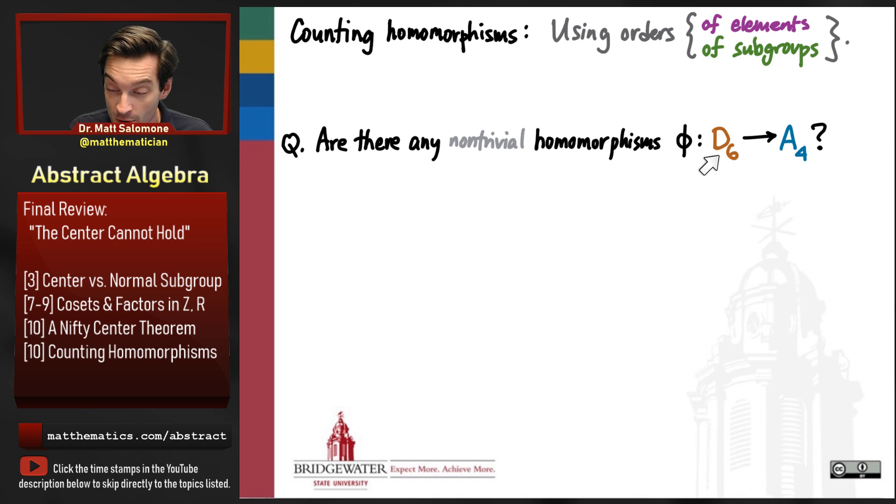Before we even get started with these, remember each of these groups has order equal to 12. The dihedral group of the hexagon has order 2 times 6, and the alternating group on four symbols has order 4 factorial over 2. Both of those are equal to 12.